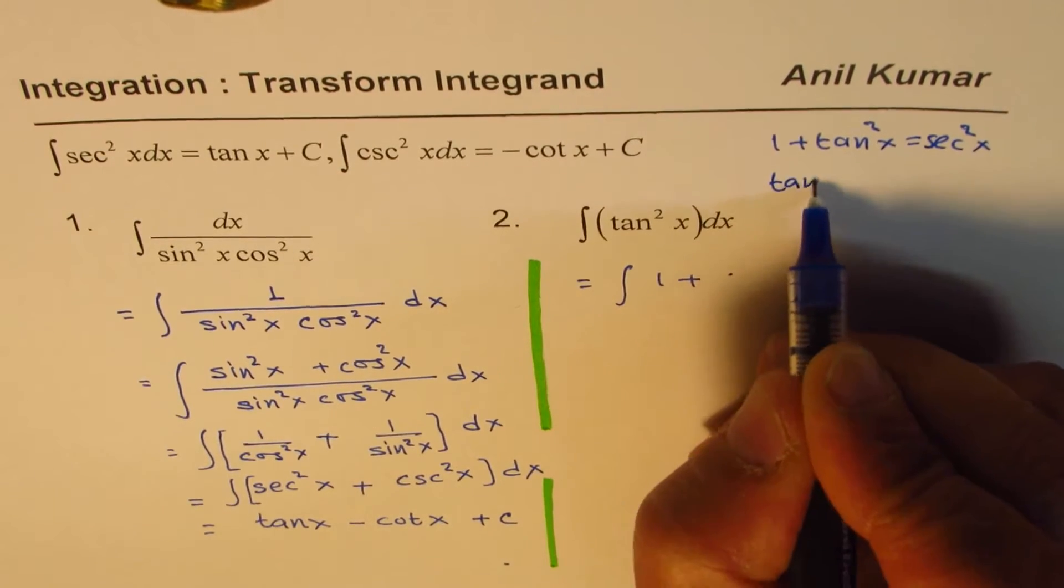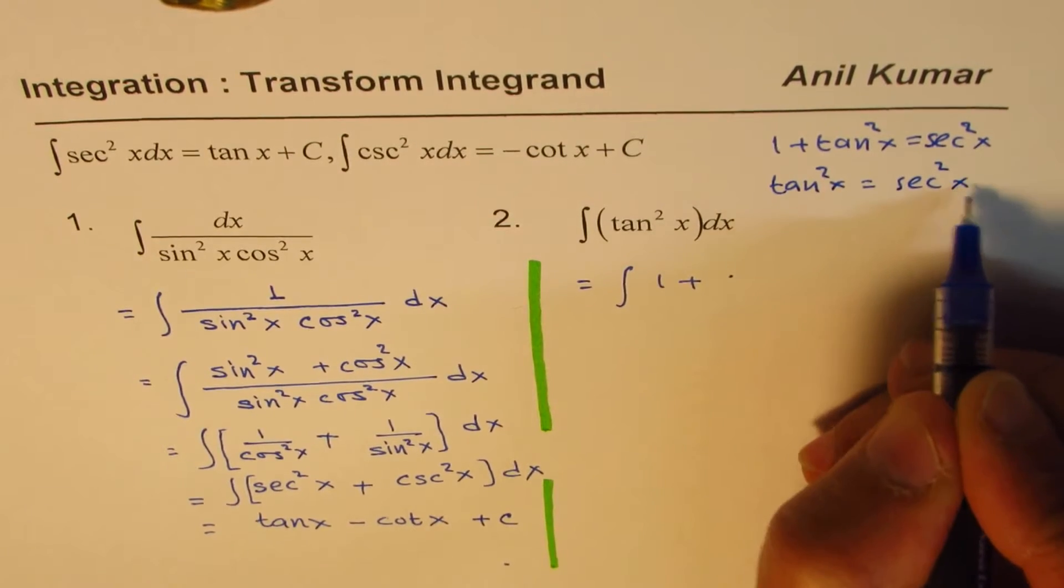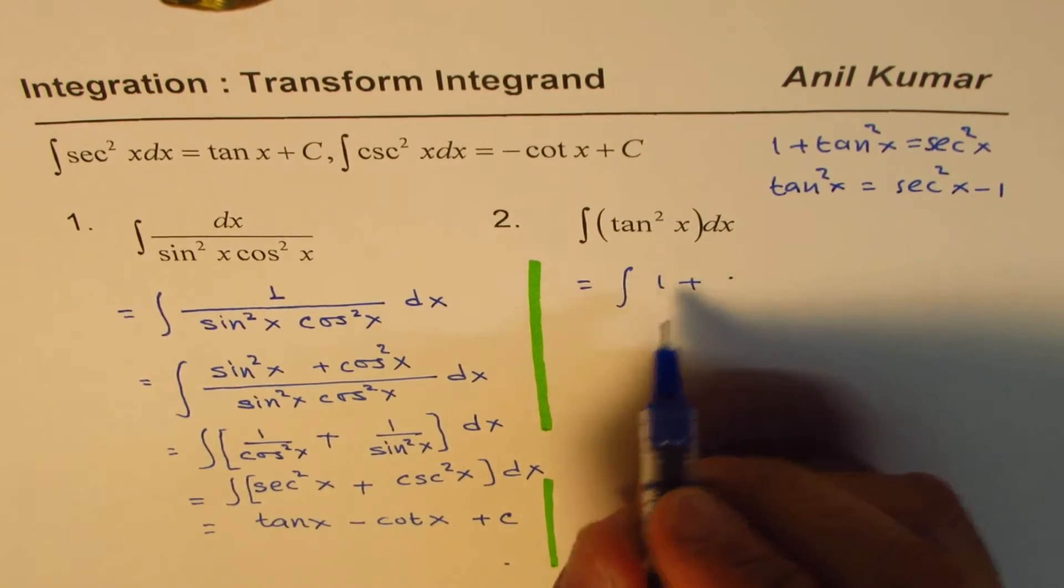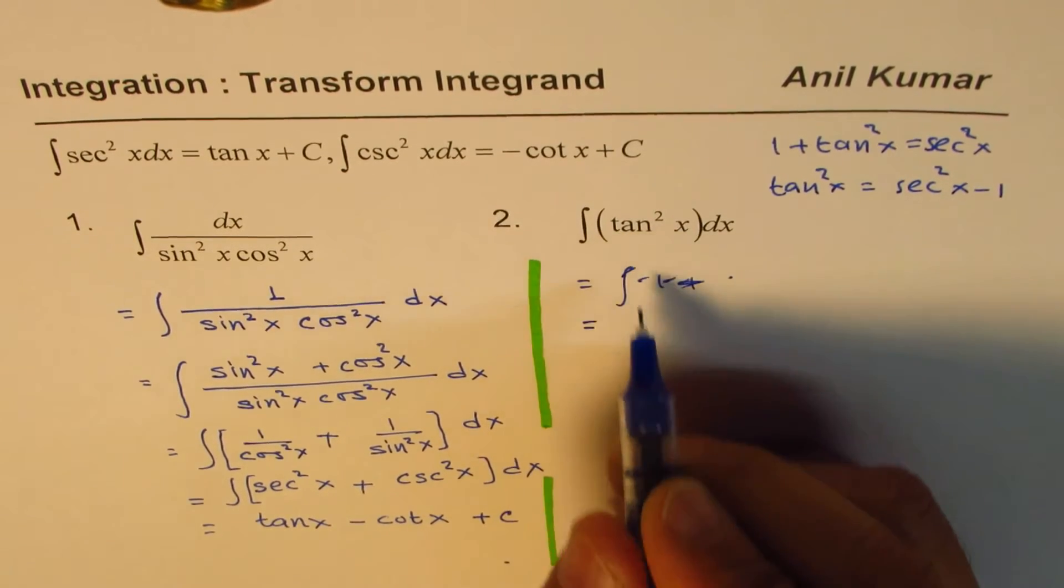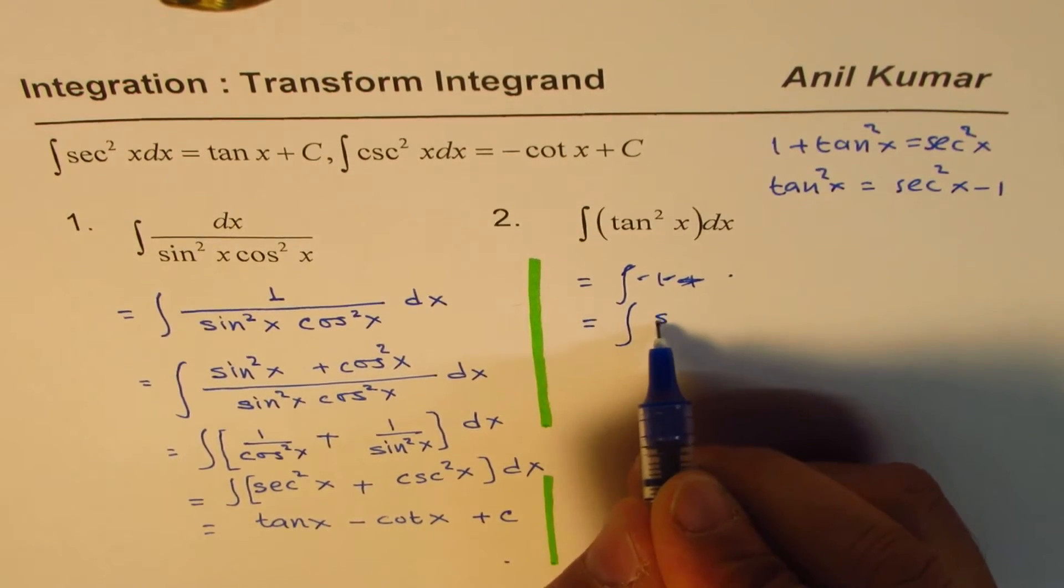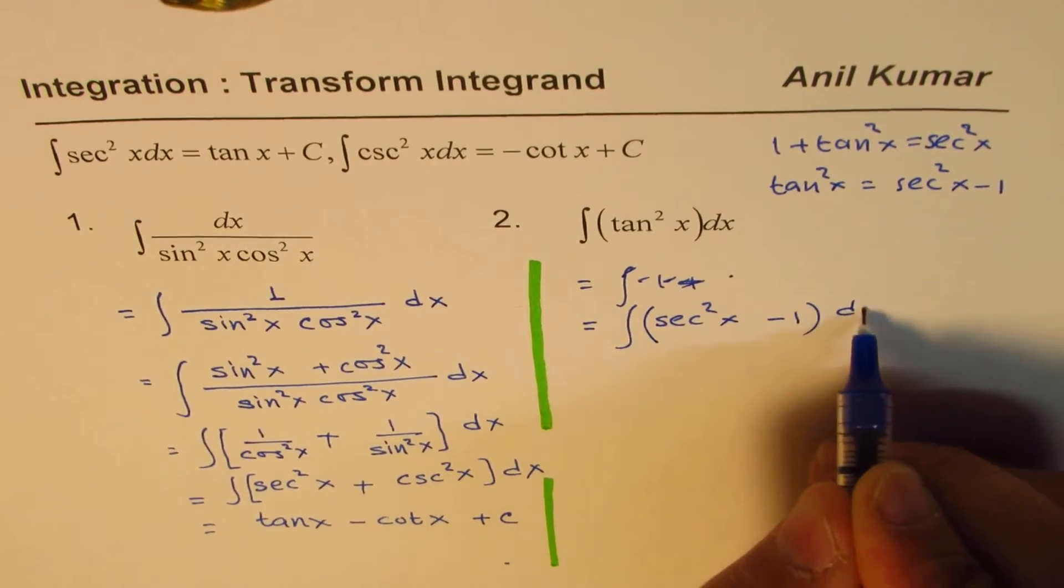So tan square x is secant square x minus 1, actually. Let me rewrite this. So tan square x can be written as secant square x minus 1. So that is how we can rewrite this.